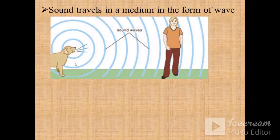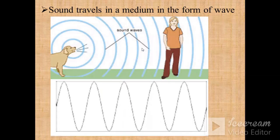How does sound travel in the medium? Sound travels in the medium in the form of waves. As you can see in this diagram, when a dog barks, the vibration moves from one point to another and can be heard by another person. The maximum displacement is what we call loudness, and the wave repeats itself. This is how sound can be represented in the form of a wave.